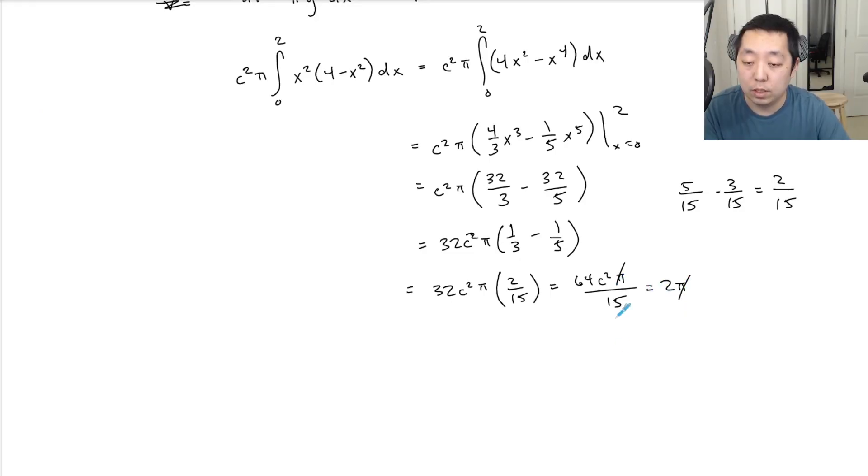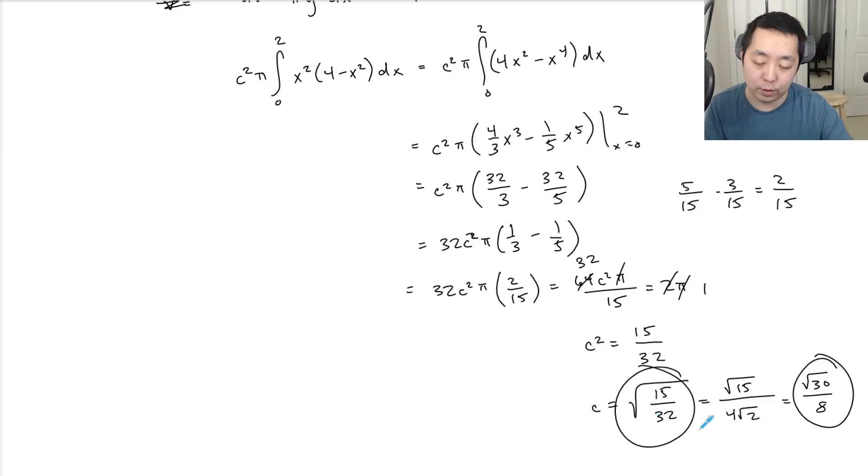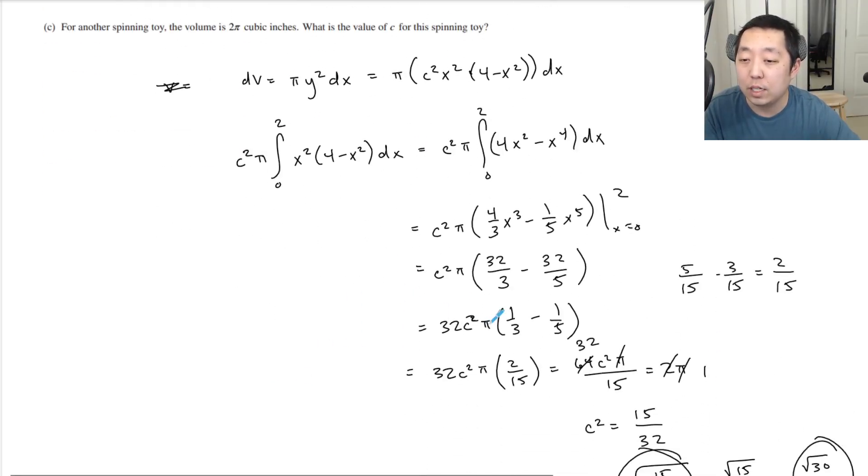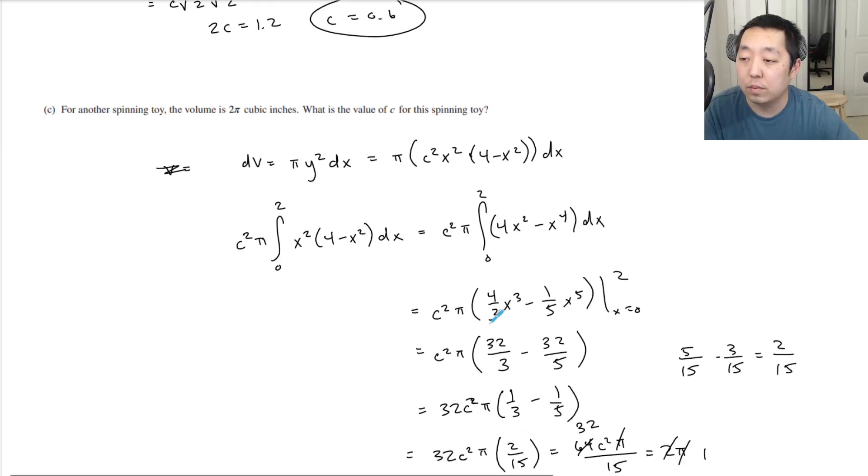So the π's cancel. I can cancel the 2, making that 1 and making that 32. So c² = 15/32, and c = √(15/32). If you really want to be picky about it, you could rationalize the denominator: that's √15/(4√2) = √15·√2/(4·2) = √30/8. I would leave my answer like that, but if you really want to rationalize the denominator, you could write it like that.